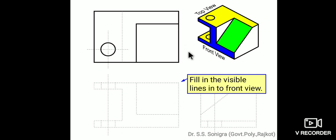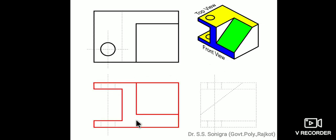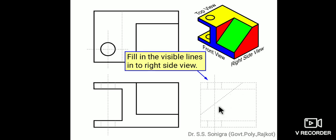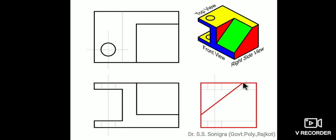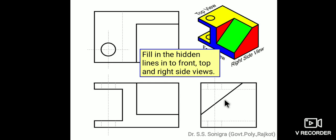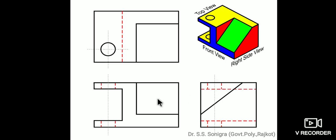Fill in the visible lines in the front view. If you are looking from the front, these lines are visible — this green plane is visible here — so this is the front view of this object. Now fill in the visible lines in the right side view. If you look from the right side, the shape appears like this — draw full lines for visible parts. This corner is not visible and this hole is not visible, so those lines will be dotted.